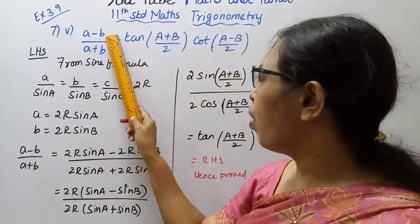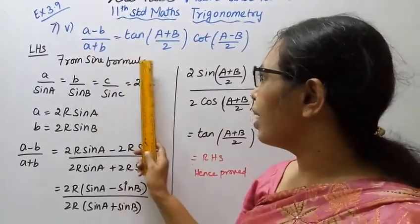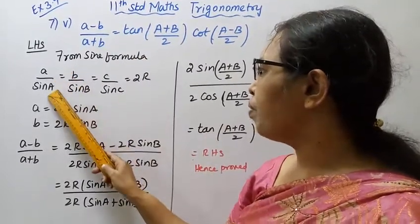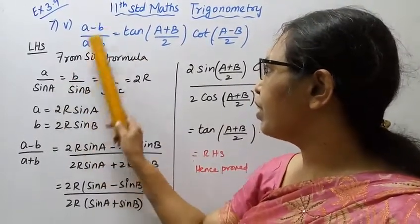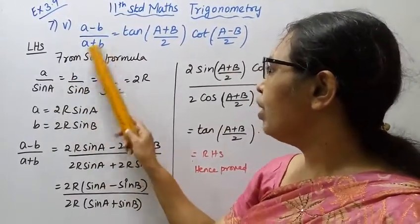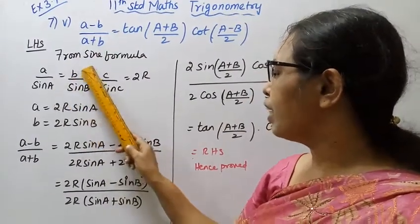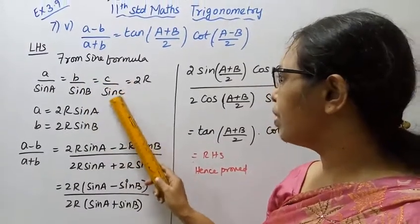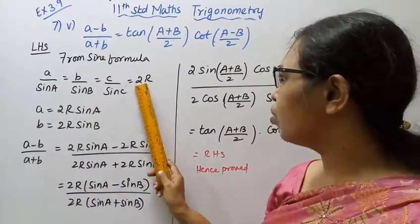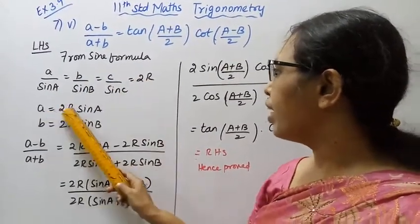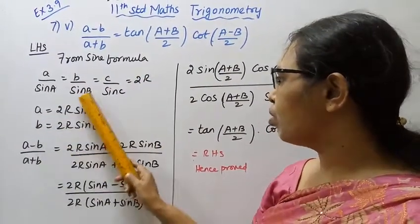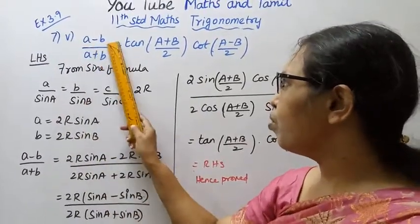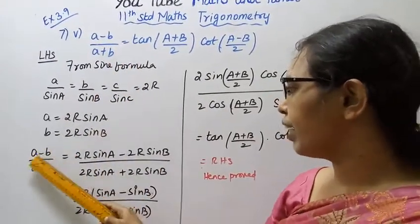We use the sine rule formula: a by sine A equals b by sine B equals c by sine C equals 2R. So a equals 2R sine A and b equals 2R sine B. Now substitute these into the left hand side.